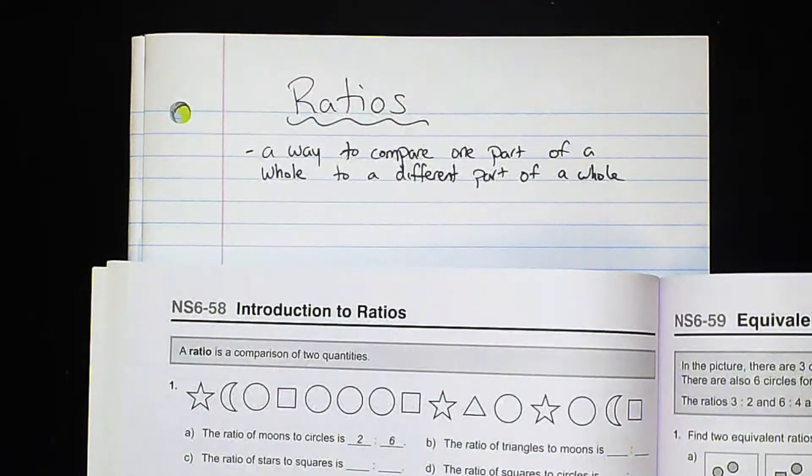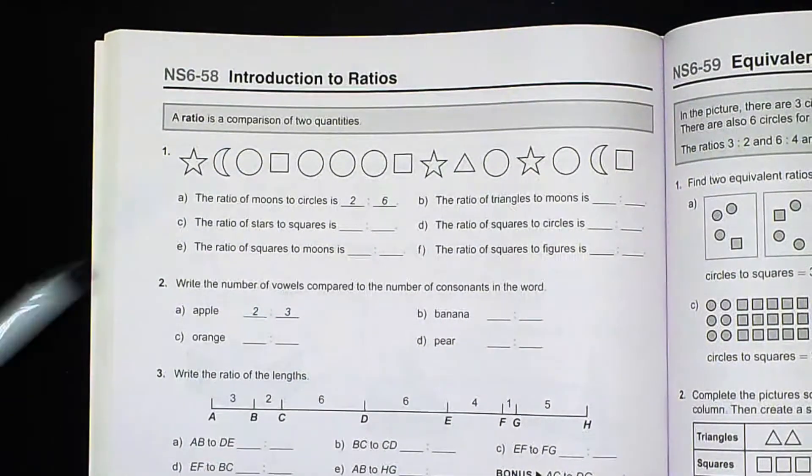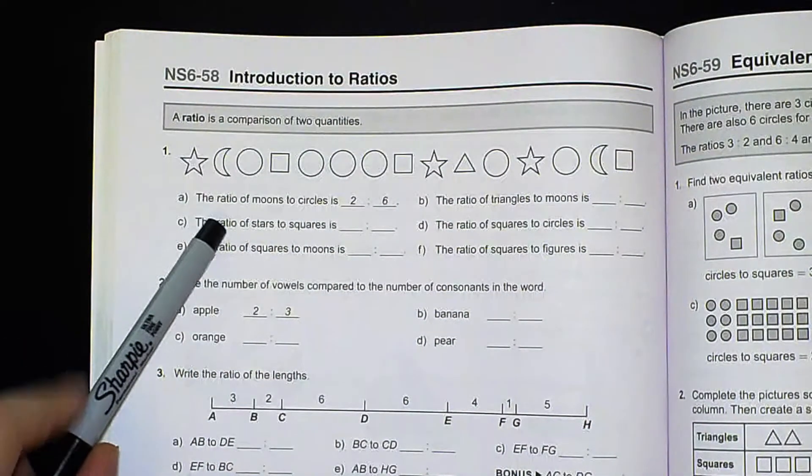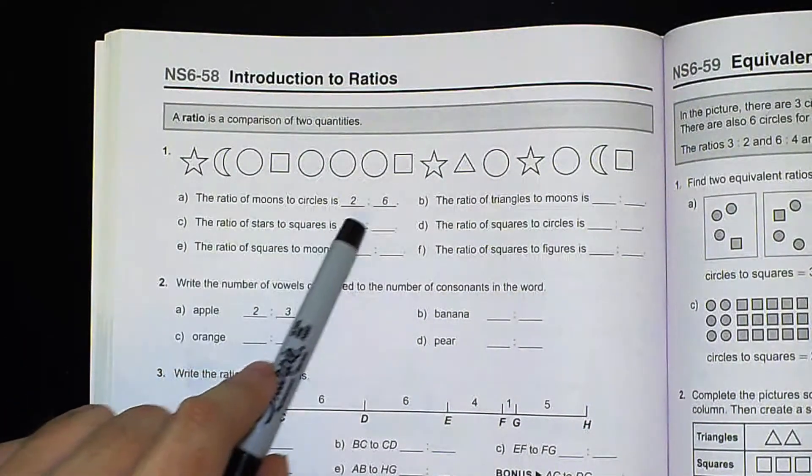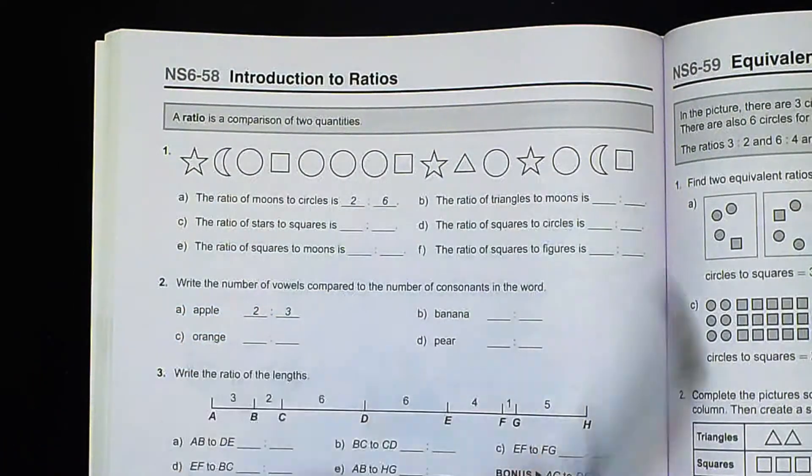Basically it's like comparing two separate things. If we look at this example here we have a whole bunch of shapes at the top here and it's asking you the ratio of moons to circles. Well there are two moons and there are six circles.